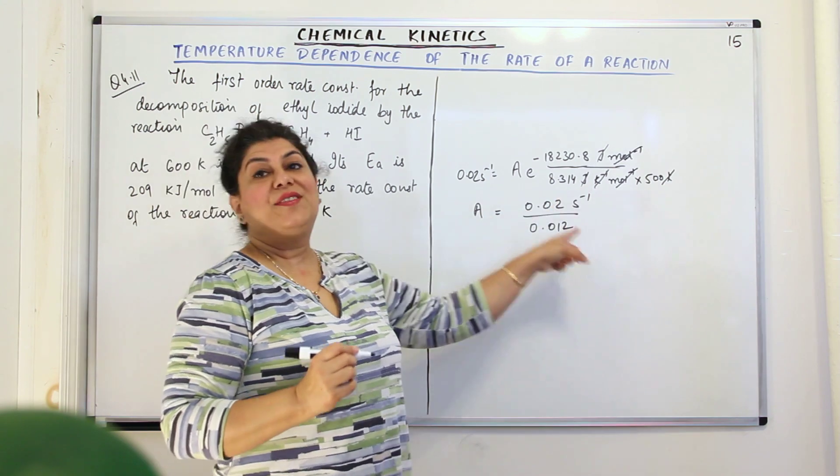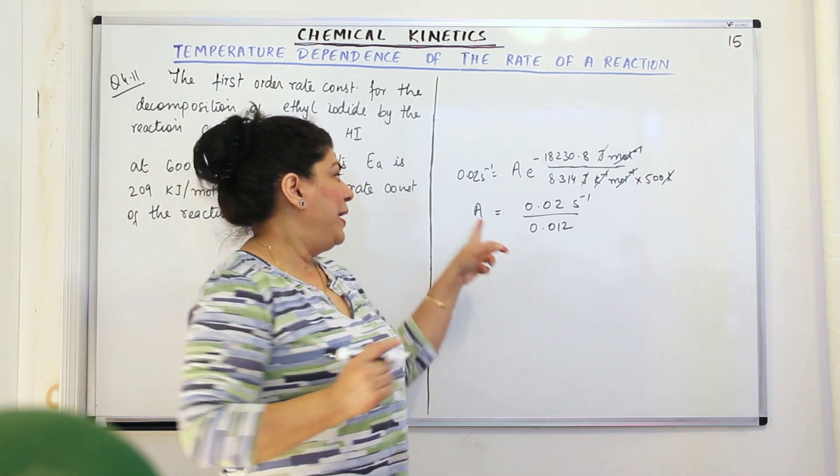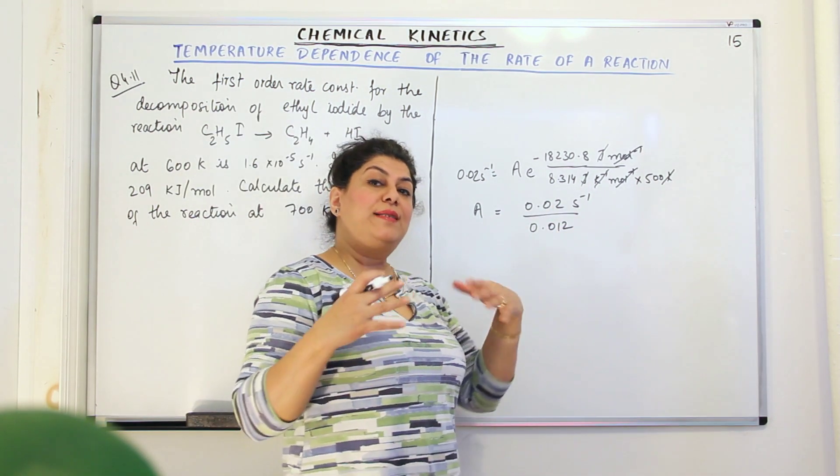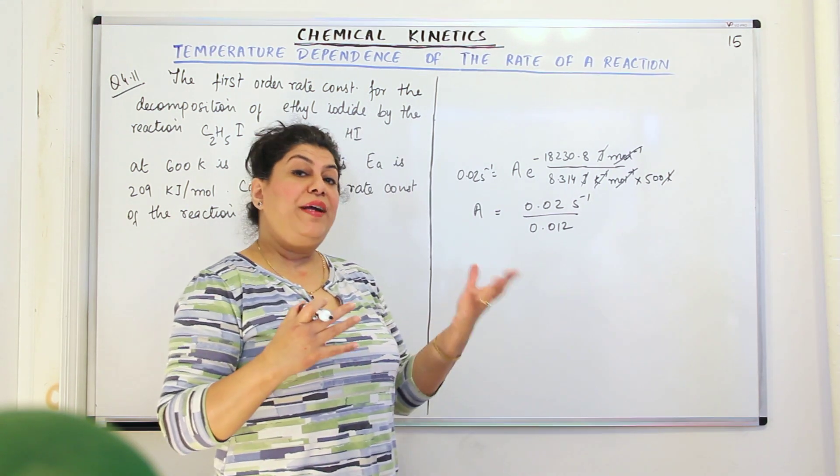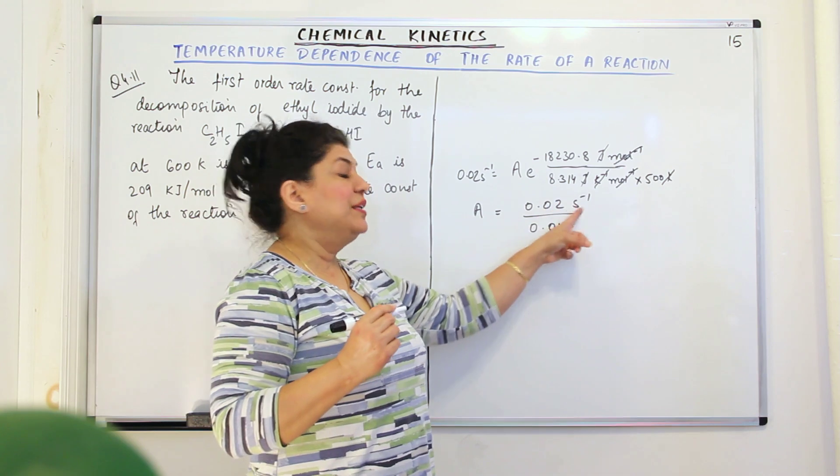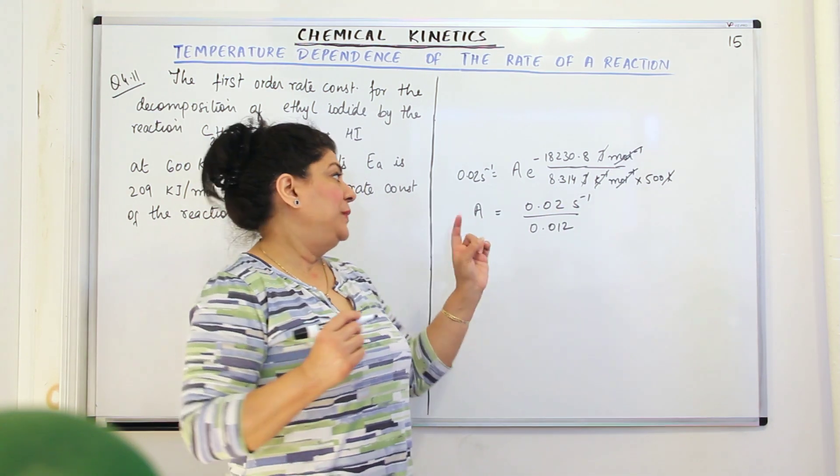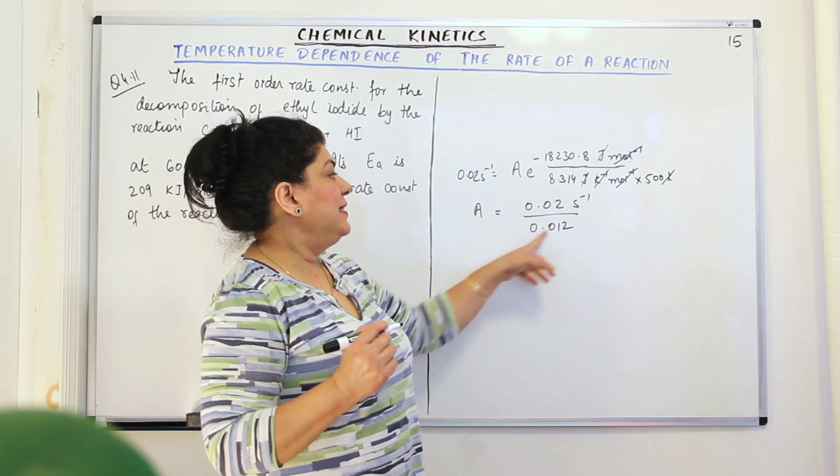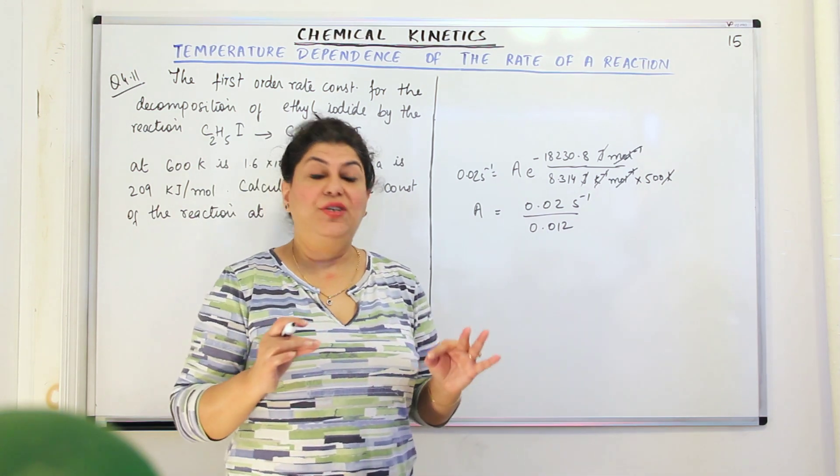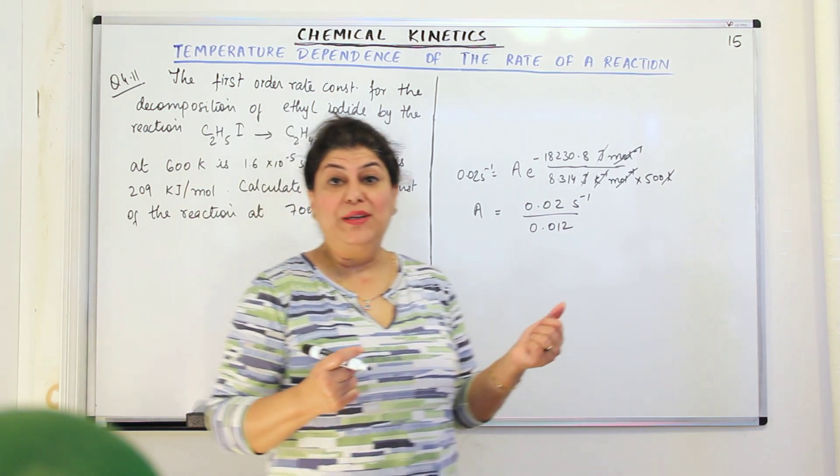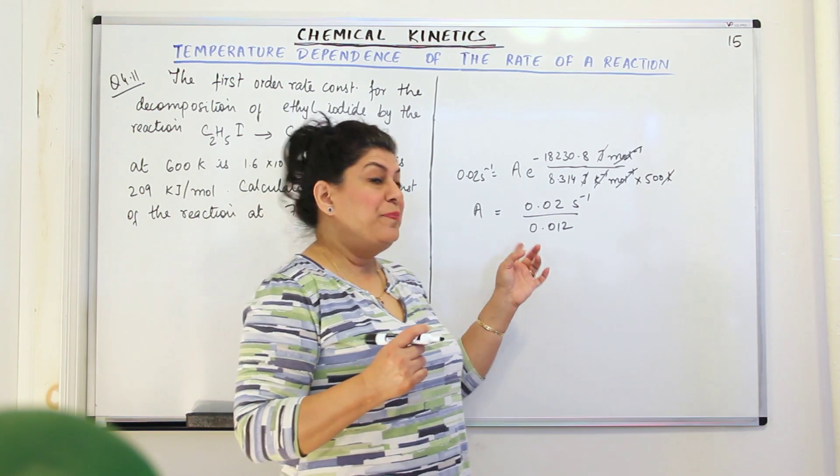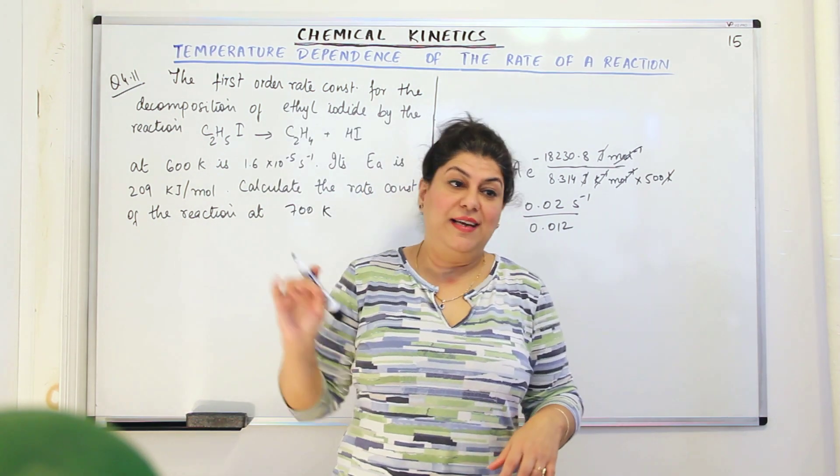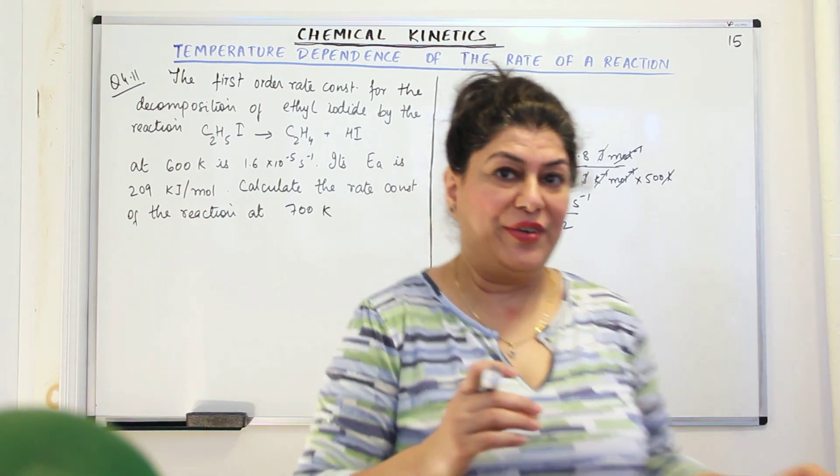Then when you calculate the value of A is equal to 0.02 per second upon 0.012, then you'll get the answer in per second. So the value of A, although it is known as a linear factor, we do not write the unit for it, but actually it should have the unit of K, that is per second. And that is how you would get the right unit and know that you plugged in the right values. So this is something that was necessary to clarify. And now I'll proceed to the next question.